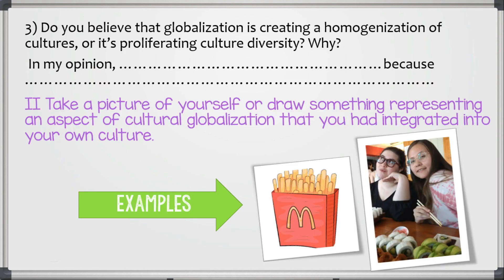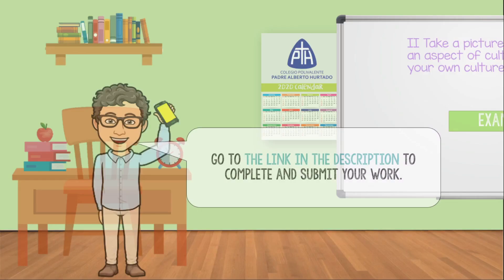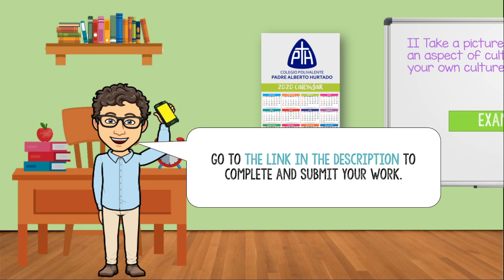Activity two: you're going to take a picture of yourself or draw something representing an aspect of cultural globalization that you have integrated into your own culture. For example, you can do a drawing — here I drew some french fries from McDonald's, which for me represent globalization because they come from another culture. Or you can find a picture of yourself eating sushi, having a baby shower, or something that represents cultural globalization. It cannot be a picture from Google — it has to be of yourself. Submit your work using the link in the description of this video, which is also available in the Google Drive folder in the instructions document.